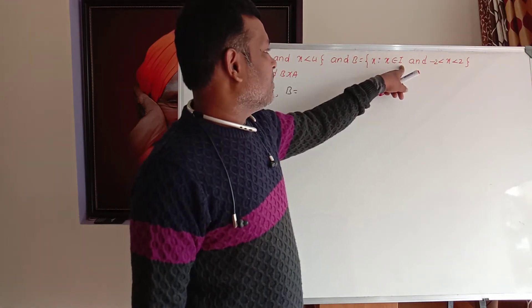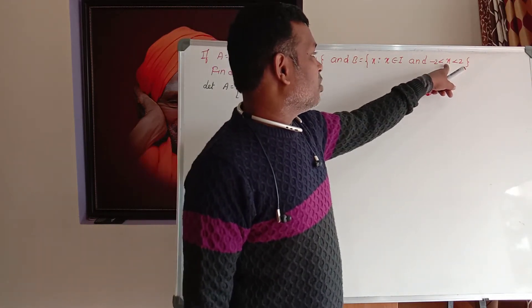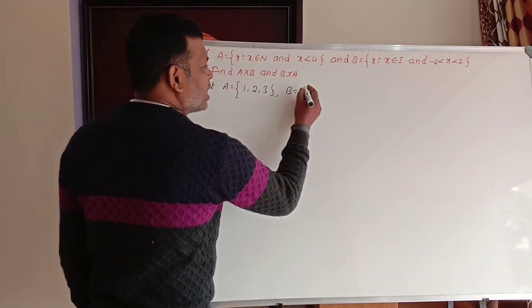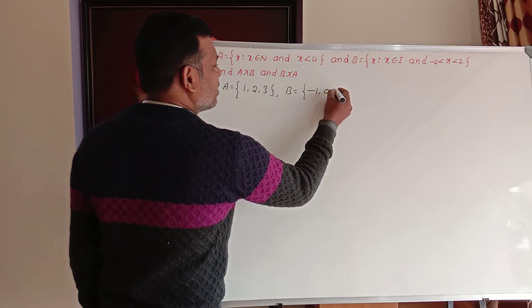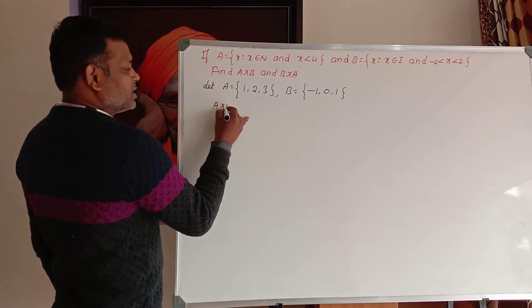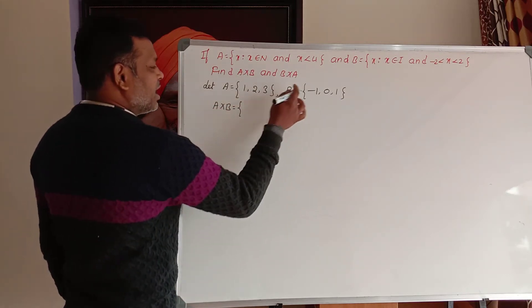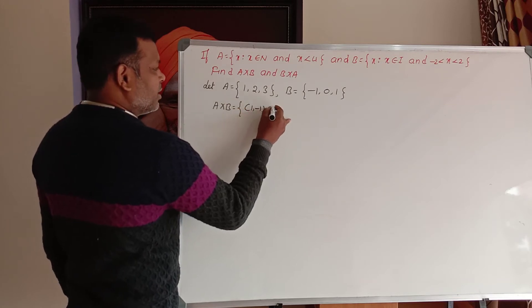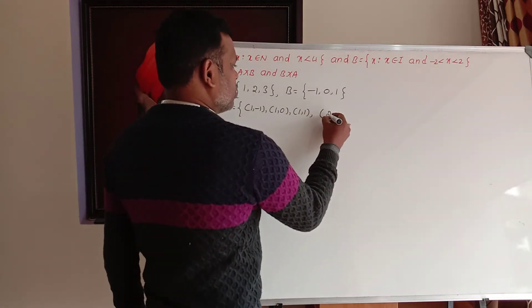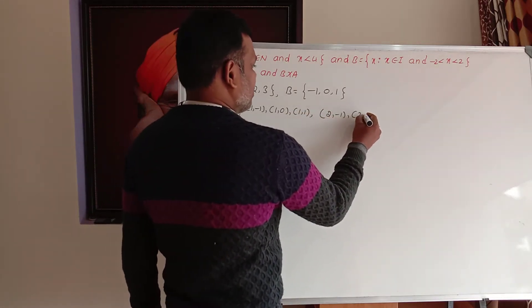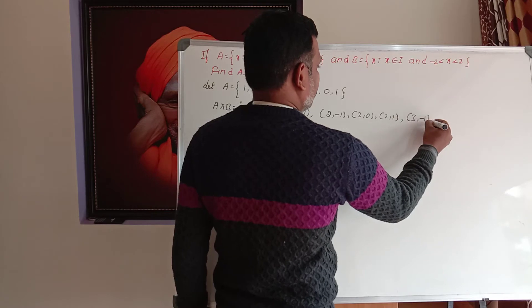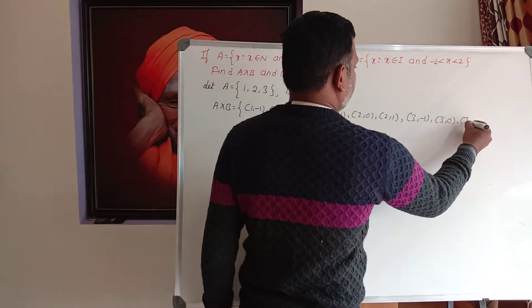Set B: x belongs to I (integers) and x is greater than minus 2 and less than plus 2. So the integer elements are: minus 1, 0, and 1.